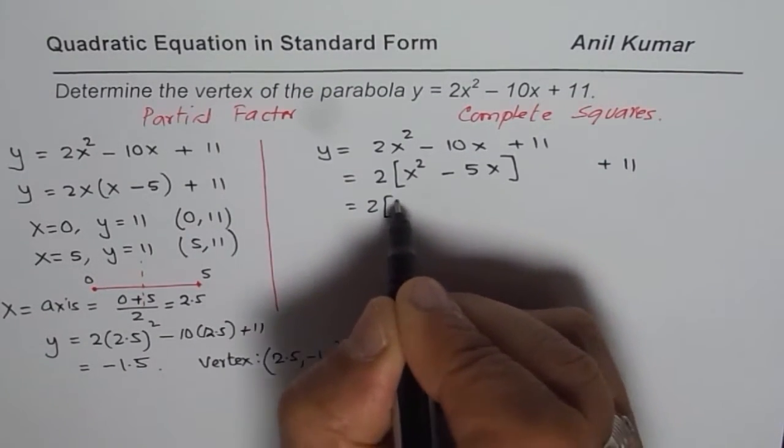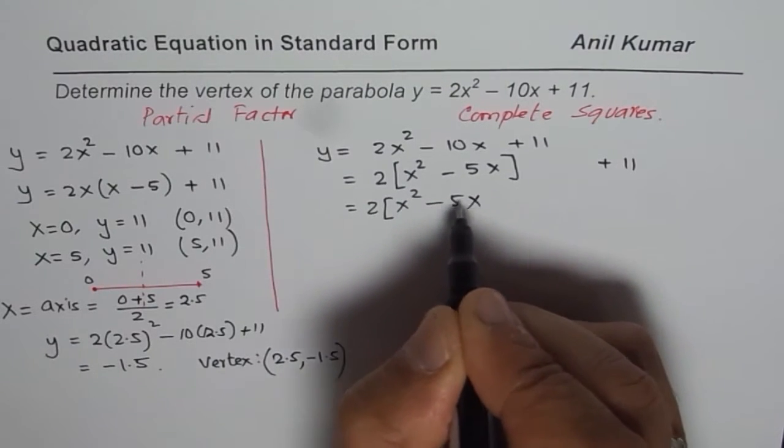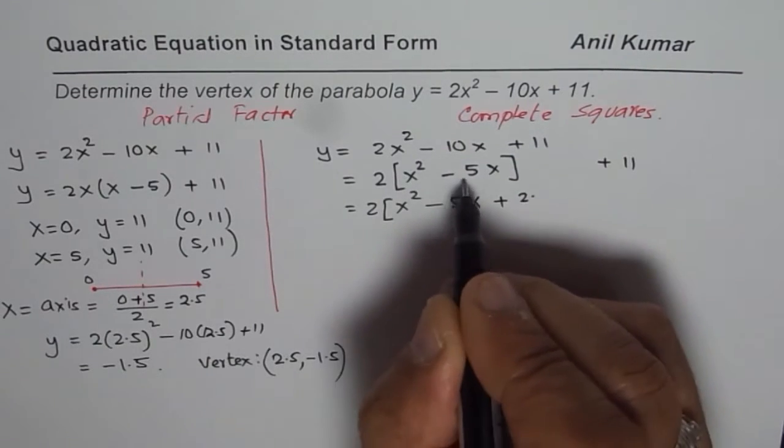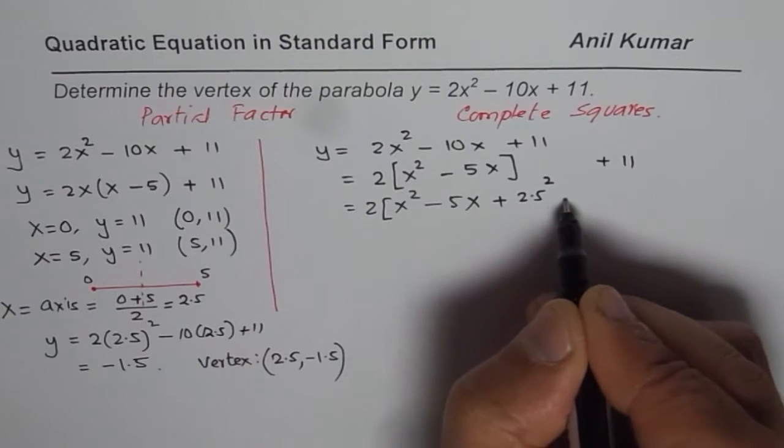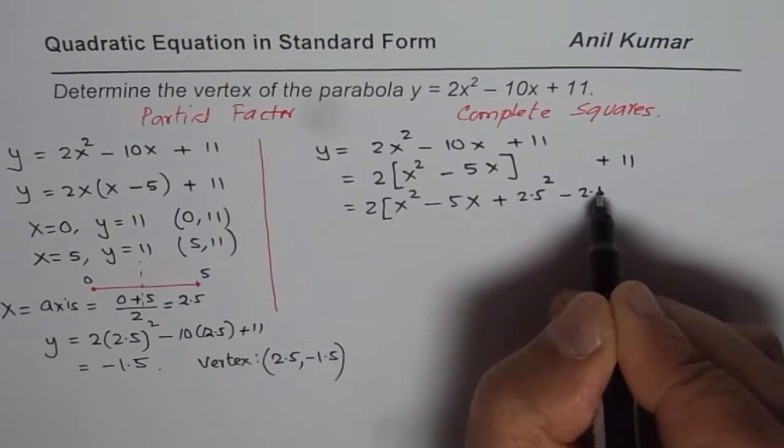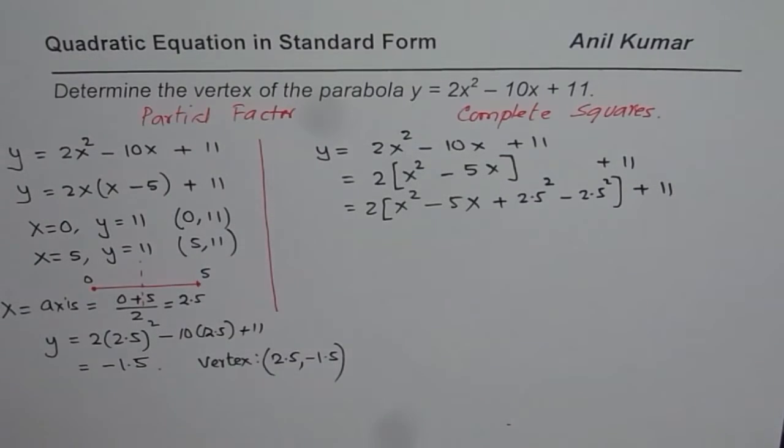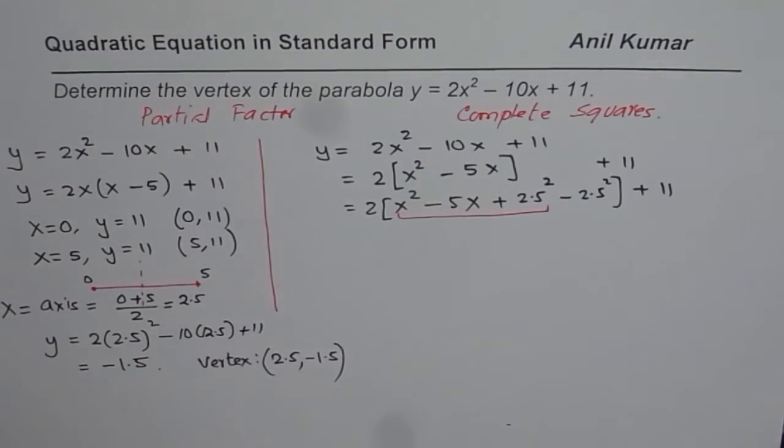The next step is to write half of 5 squared, which is 2.5 is half of 5, 2.5 squared. So add and subtract this term. When you add and subtract the same term, it is kind of 0. Adding 0 means you're not changing the equation. But by doing so, you make these three terms a perfect square.